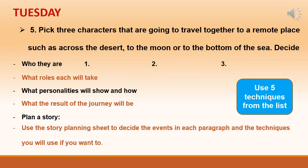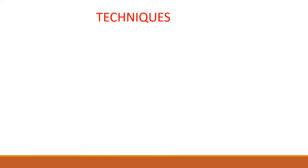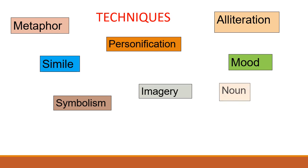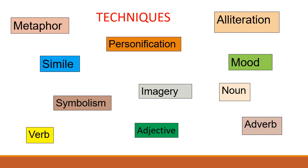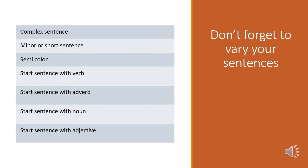Use five techniques from the list below. It's really important to vary your sentences so your writing isn't boring. Use a complex sentence, a minor or short sentence, a semicolon which joins two sentences that are related in meaning and can replace a joining word. And start four sentences with different things: a verb, an adverb, a noun and an adjective.